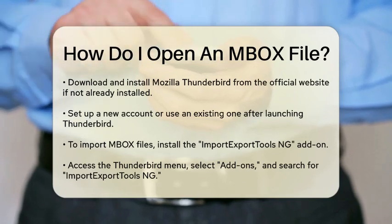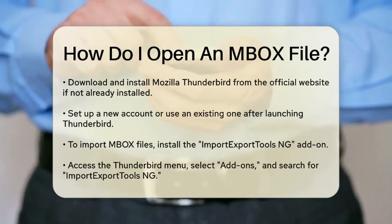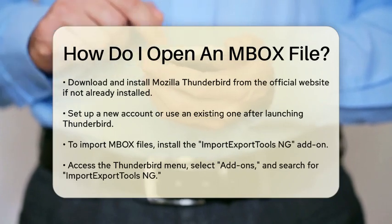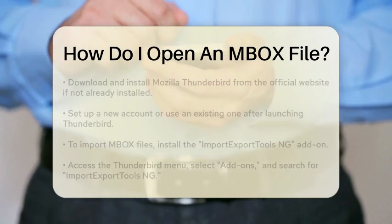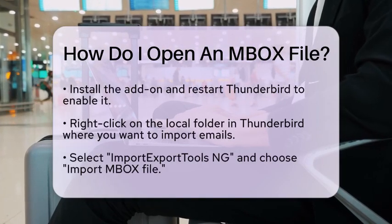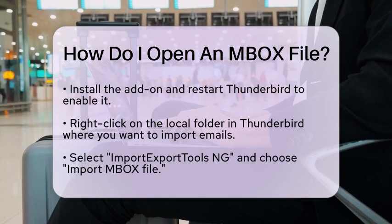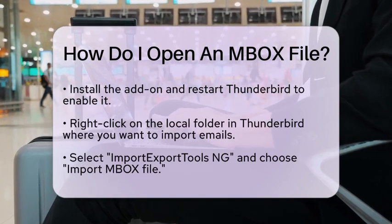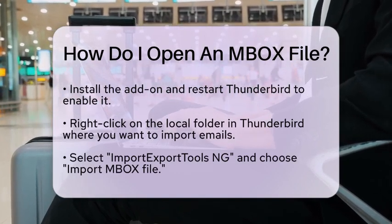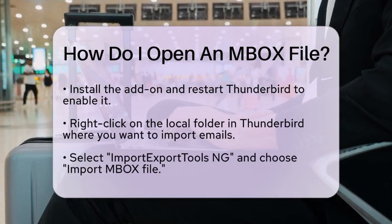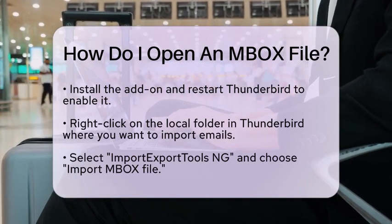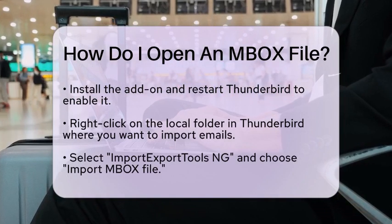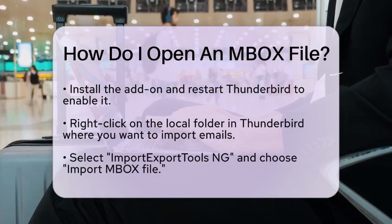To import the file, you will need to install an add-on called ImportExportTools NG. This add-on allows you to import MBOX files easily. To install it, go to the Thunderbird menu, select Add-ons, and search for ImportExportTools NG. Once you find it, click on Install and restart Thunderbird.